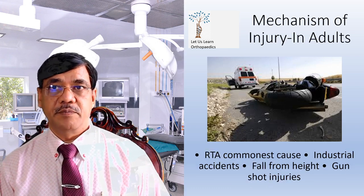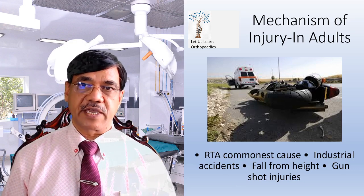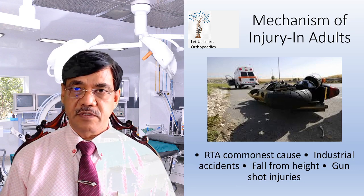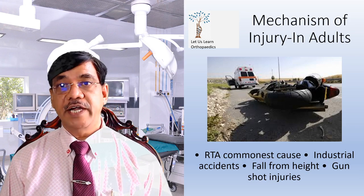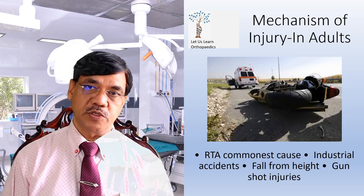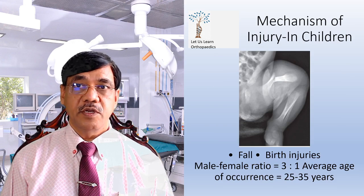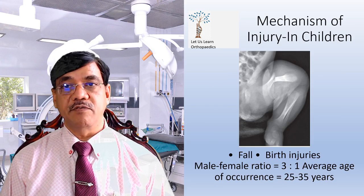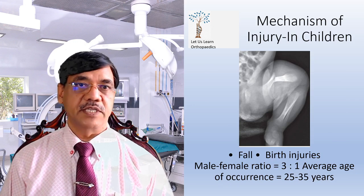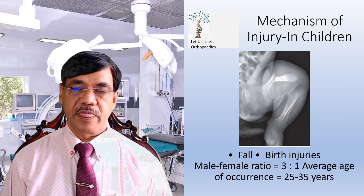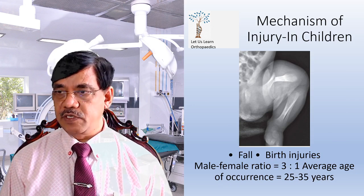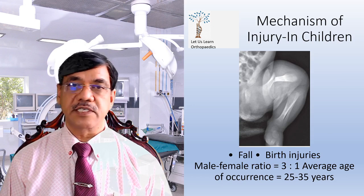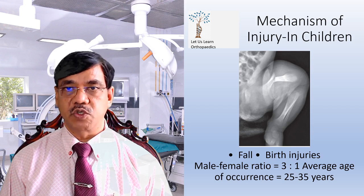The mechanism includes road traffic accidents, industrial accidents, fall from height, and gunshot injuries. In children, the mechanism of injury includes mainly falls and birth injuries. The male to female ratio is 3:1 and the average age of occurrence is 25 to 35 years.